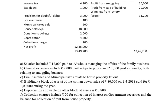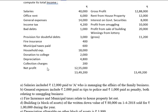Salaries included Rs. 12,000 paid to A who is managing the affairs of the family business. General expenses include Rs. 2,000 paid as tips to police and Rs. 1,000 paid as penalty, both relating to smuggling business. Life insurance and municipal taxes relate to house property let out. Building block of assets written down value is Rs. 80,000, sold for Rs. 1,00,000 during the year. Depreciation allowable on other block of assets is Rs. 3,800. Collection charges include Rs. 200 for collection of interest on government securities and the balance for collection of rent from house property.